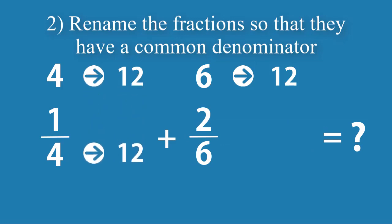What do we have to do to 4 to increase it to 12? We multiply it by 3. If you multiply the bottom of the fraction by 3, you must do the same to the top.